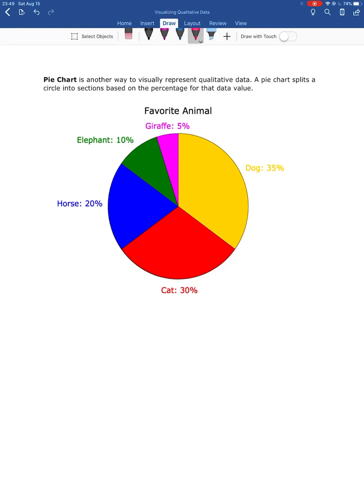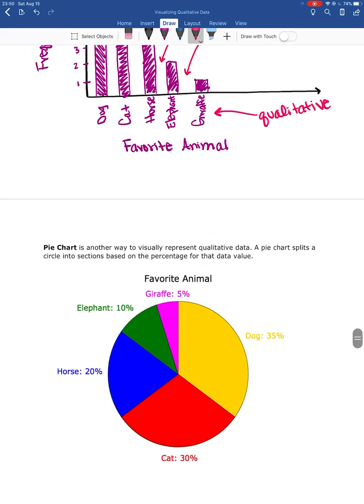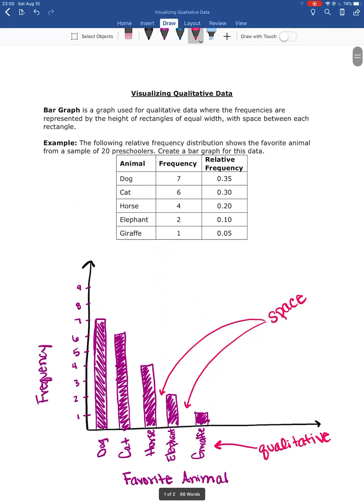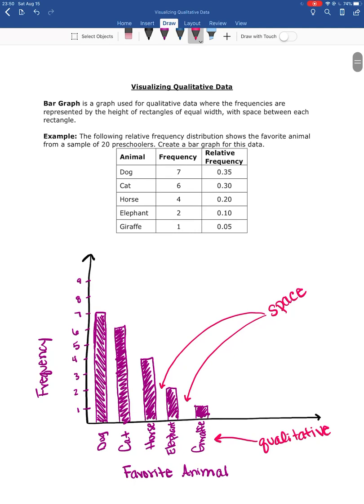So visualizing qualitative data: we have pie charts, which we're not going to draw but we could look at them, figure out how to read them. And then bar charts or bar graphs—I might ask you to draw a bar graph, I'm mostly going to ask you to read bar graphs, however. So being able to look at this and say, okay, here's dog which has a height of seven, goes up to the seven, so dog occurred seven times. And that's how we visualize qualitative data.